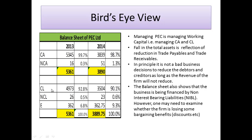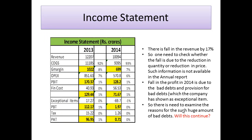Excess dependence on current liabilities raises concerns about whether the company is losing bargaining benefits such as discounts from suppliers. It is necessary to examine whether the firm is losing such benefits and whether this leads to a significant loss in profit. Moving to the income statement, there is a 17% reduction in revenue in 2014. Whether this fall is due to reduced quantity sold or reduced prices cannot be answered from financial statements alone, as such information is not mandatory under GAAP.